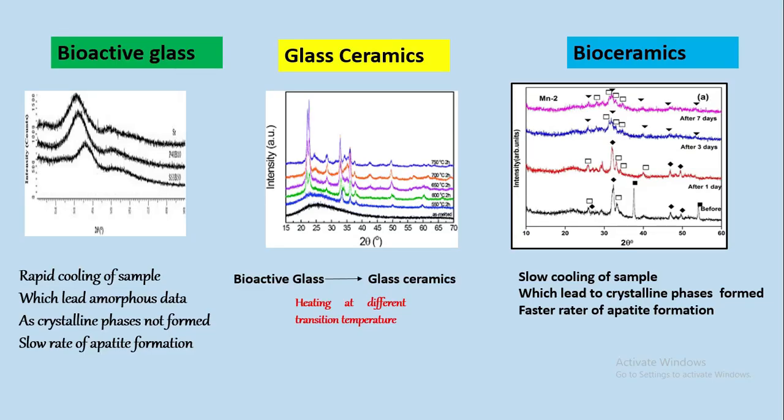Now we're going to discuss the main structural differences between bioactive glass, glass ceramics, and bioceramics. From XRD data, we can see bioactive glass is amorphous. For glass ceramics, first the bioactive glass shows amorphous region, and after heating at different transition temperatures (600-700), the crystalline phases start to develop, whereas in bioceramics we get crystalline phases.